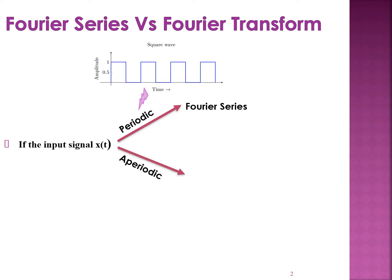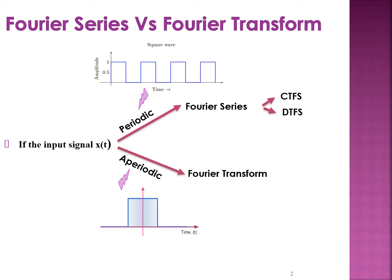When the signal is aperiodic, then we go in for Fourier transform. A signal that doesn't repeat itself is called an aperiodic signal, and in that case we go in for Fourier transform. In Fourier series itself, based on whether the signal is CT or DT, we have continuous time Fourier series and discrete time Fourier series. Similarly, in Fourier transform we have continuous time Fourier transform and discrete time Fourier transform.